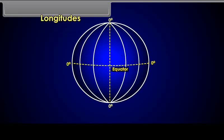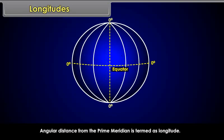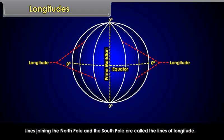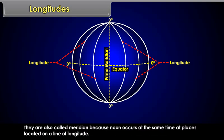Longitudes: Angular distance from the prime meridian is termed as longitude. Lines joining the North Pole and the South Pole are called the lines of longitude. They are also called meridians because noon occurs at the same time at places located on a line of longitude.